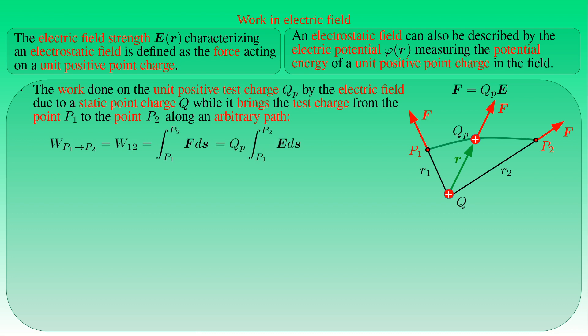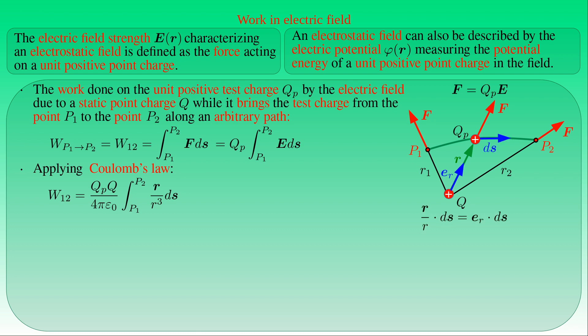Since the electrostatic field is produced by point charge Q, we apply Coulomb's law: the electric field strength equals Q over 4πε₀ times the position vector R divided by the cube of its length. The normalized position vector R is the unit vector eR pointing from Q toward the test charge, and we compute its scalar product with the line element vector dS. This scalar product gives the differential dR at the instantaneous position of the test charge, transforming the line integral into an integral with respect to R from R1 to R2 — the distances of P1 and P2 from Q.